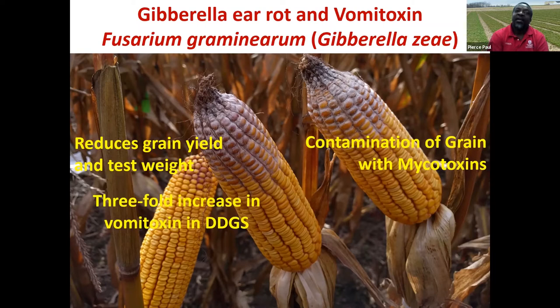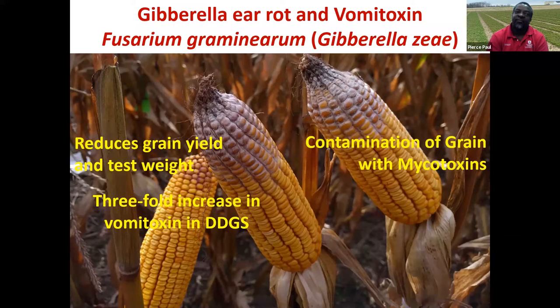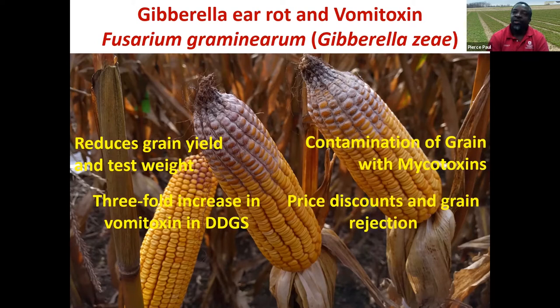Vomitoxin increases threefold in DDGs during ethanol production. DDGs are a co-product of ethanol production used as a nutrient-rich source of food and ration for animals. If you've got grain contaminated with vomitoxin, because that vomitoxin is not lost during ethanol production and concentrates in the one-third of grain that goes into making DDGs, DDGs can have three times more vomitoxin than the original grain. Because of this, ethanol plants may price down or completely reject grain depending on vomitoxin levels.